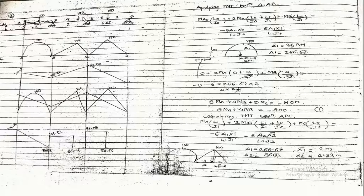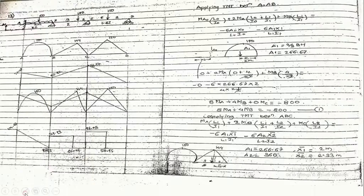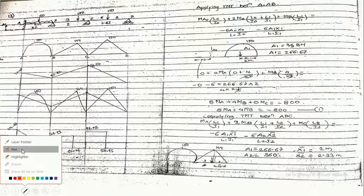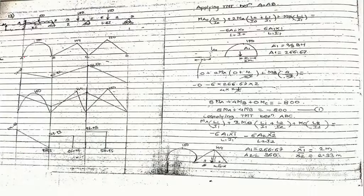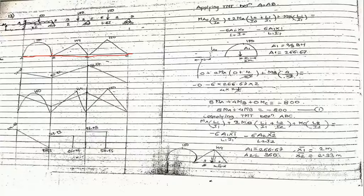The very first step is to draw the bending moment diagram — the free bending moment diagram. Looking at their loading conditions, we draw the free bending moment diagram. I am highlighting the two spans: this is the bending moment diagram for spans AB, BC, and CD. Span AB carries a uniformly distributed load.